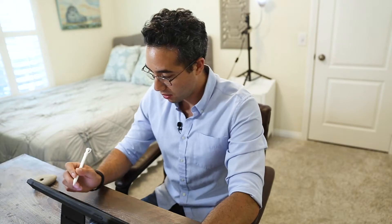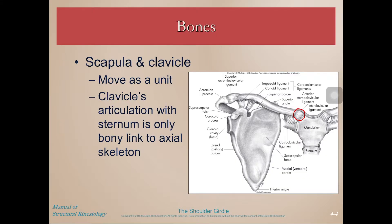Here is a picture of it. Here's the sternoclavicular joint, and over here is the acromioclavicular joint. You can see the clavicle and the scapula. Because of these linkages, the scapula and clavicle move as a unit. If we drew the humeral head in here articulating with the glenoid fossa, the linkage goes from your arm to the scapula, then into the clavicle, and then to the sternum. So your shoulder girdle is responsible for that linkage between your torso and your arm.